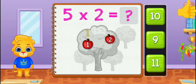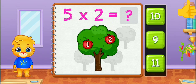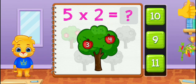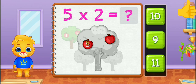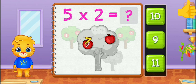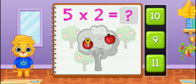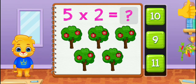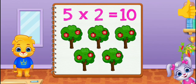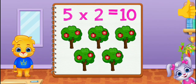One, two, three, four, five, six, seven, eight, nine, ten. Five times two equals ten.